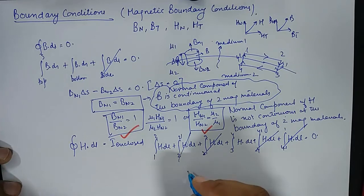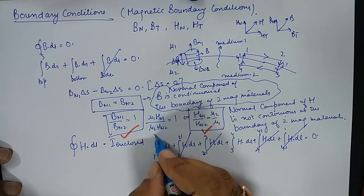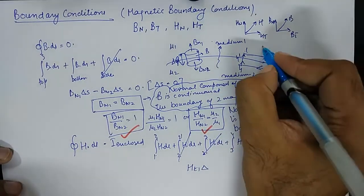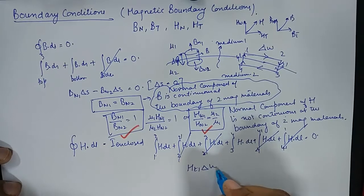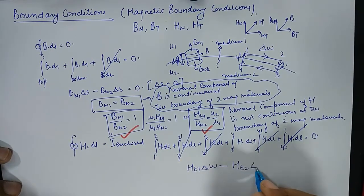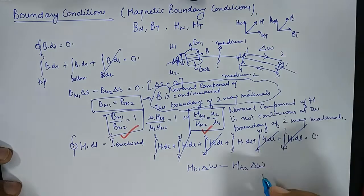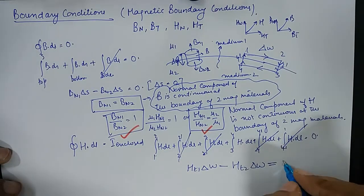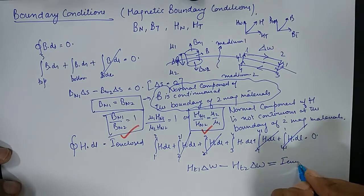So what we are left with is HT1. By the way, 1 to 2 is HT1. This is the tangential component. The tangential component HT1 delta W minus HT2 delta W, minus because I will reverse the direction. They become equivalent to I enclosed.